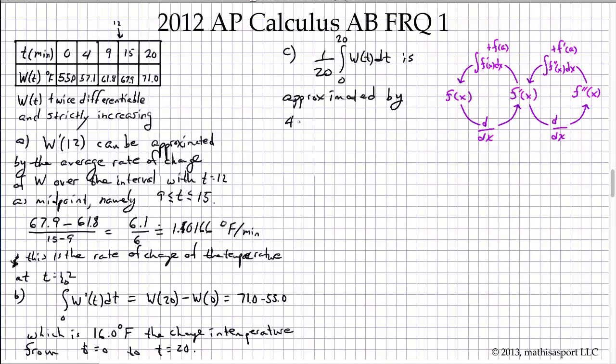So I'll write 4 times 55.0. Now I add the area of the next rectangle. Again, I say area, but we're talking about the signed area. But in this case all of the signed areas come out positive, so there's really no distinction. Here the width is between 4 and 9, so that's 5, and we again use the left most side, so 5 times 57.1. Plus, now the width is 6, we again use the left most temperature at the left most point, 61.8. And finally, a width of 5, and the left most temperature of 67.9.